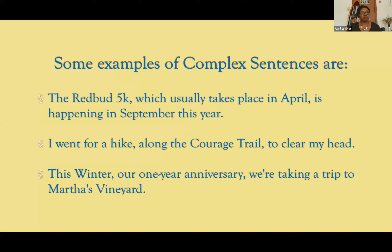The first example: 'The Redbud 5K, which usually takes place in April, is happening in September this year.' So why is this a complex sentence? Our independent clause is actually broken up by our dependent clause — it's sandwiched in between. The independent clause is 'The Redbud 5K is happening in September this year.' You could take out the dependent clause 'which usually takes place in April' and it would still be a complete sentence, but you want to add emphasis to when it takes place.